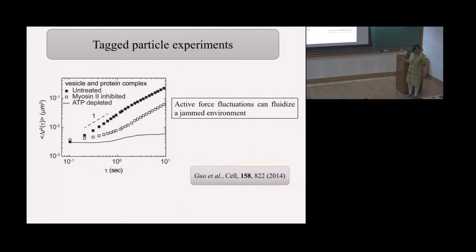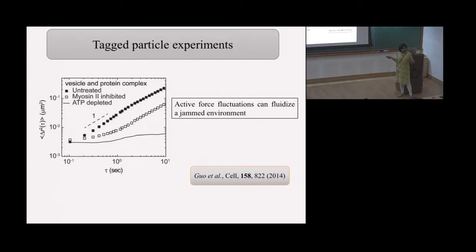They looked at mean square displacement of the tagged particle versus time. When they just looked at the live cell, the timescales were fast. When they inhibited the myosin, a cage began to develop. When they depleted the ATP — because molecular motors hydrolyze ATP to become active — they got just a plateau, showing full caging.